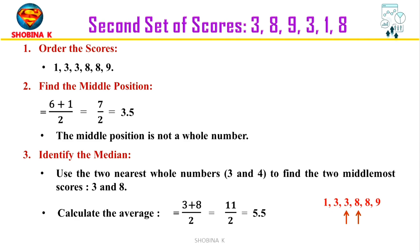Now average them by adding and dividing by 2. Add the two middle-most scores: 3 + 8 = 11, then divide by 2. This gives 11 ÷ 2 = 5.5. Therefore, in this case the median is 5.5.